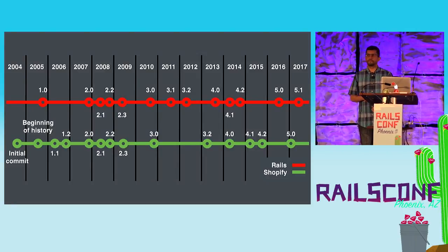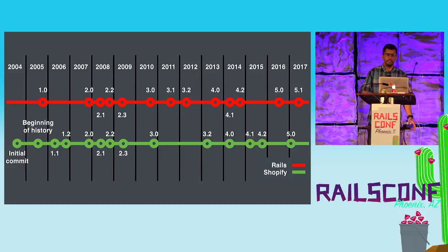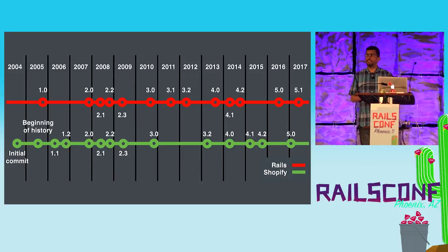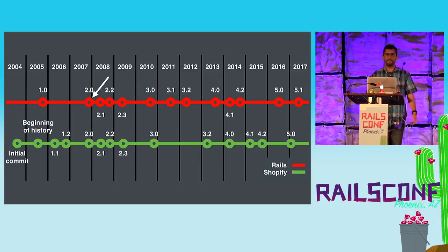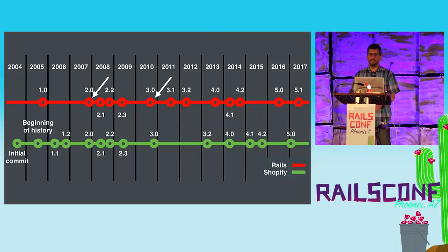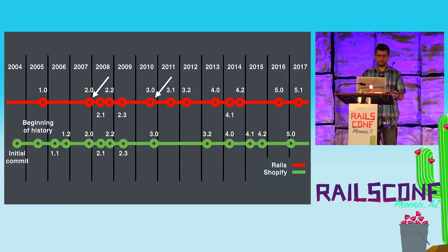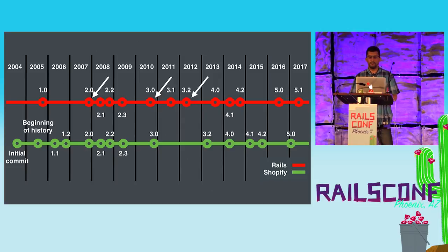This is a timeline comparison between Rails and the Shopify codebase. We can see that Shopify followed the Rails versions really closely. For Rails 2.0, Shopify upgraded just after the release. The same case happened with Rails 3.0, just close to the release. But for Rails 3.2, we took a little more time — almost one year after that, we upgraded to Rails 3.2.